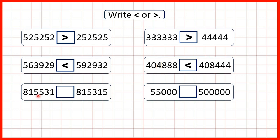Now 815,531 and 815,315. Both numbers have eight in the hundred thousands, one in the ten thousands, and five in the thousands. So we need to go to the hundreds column. Here we have a five but here we only have a three, so this first number is our larger number.